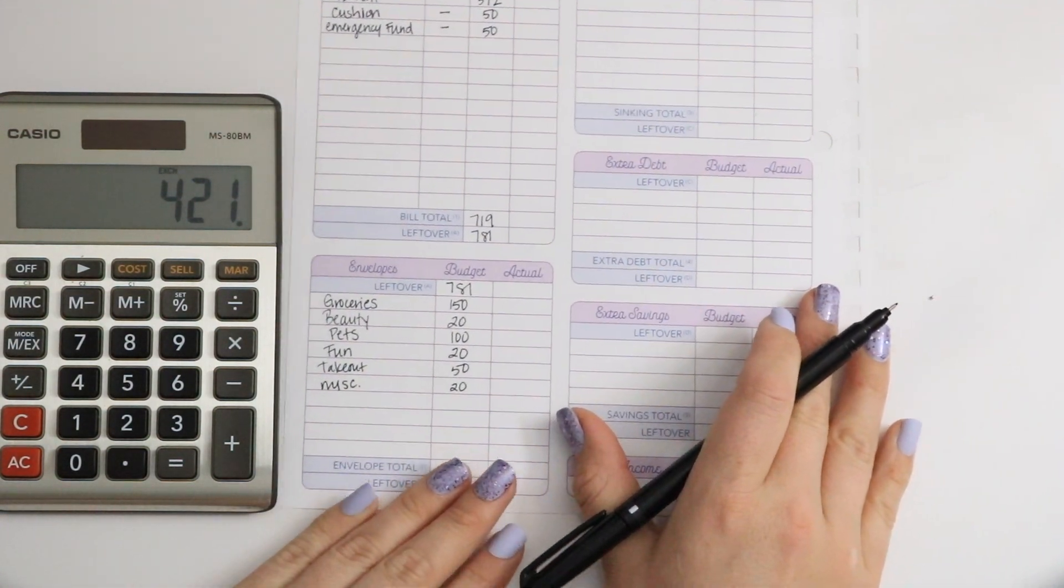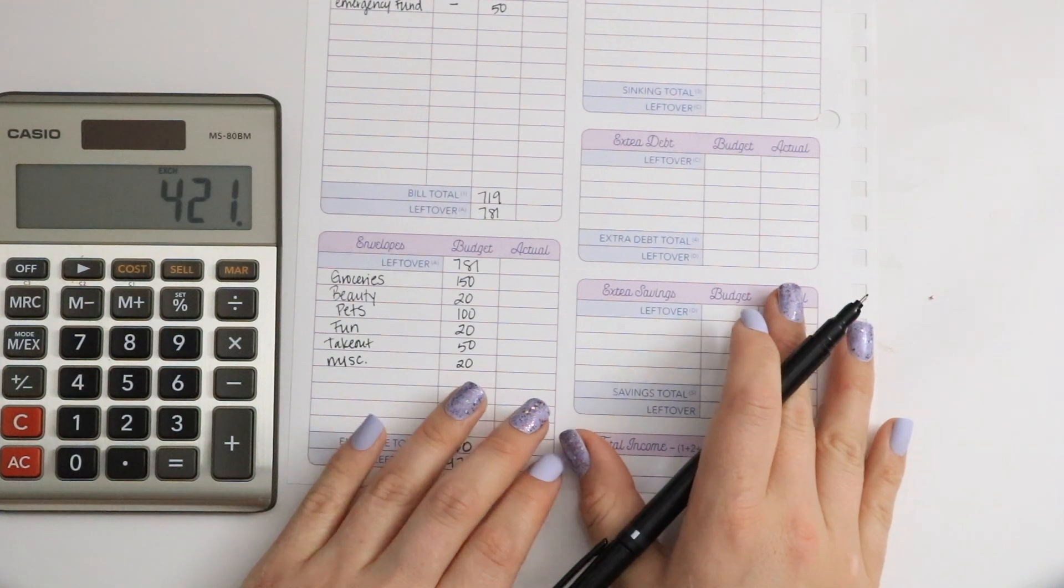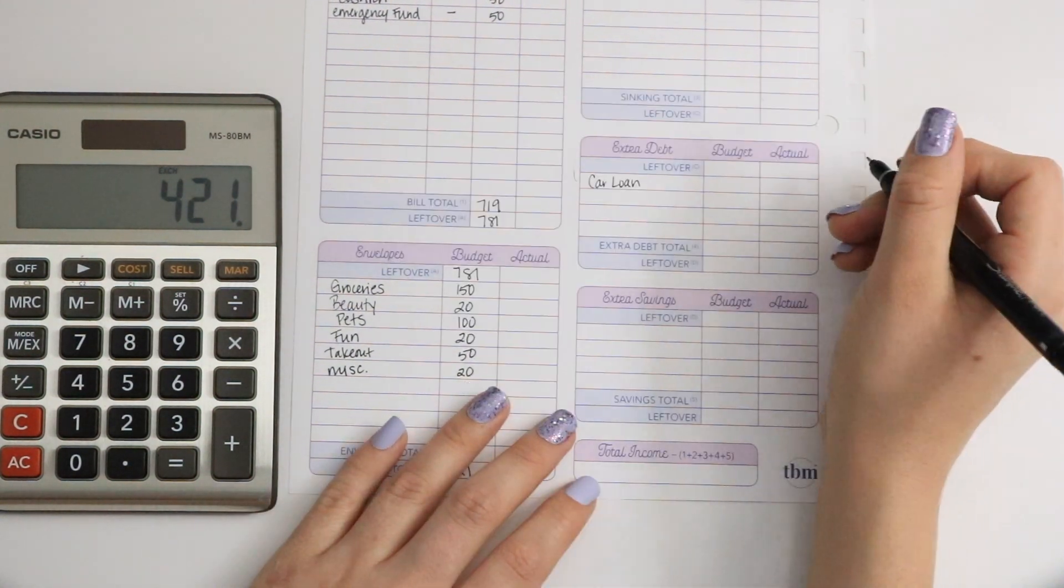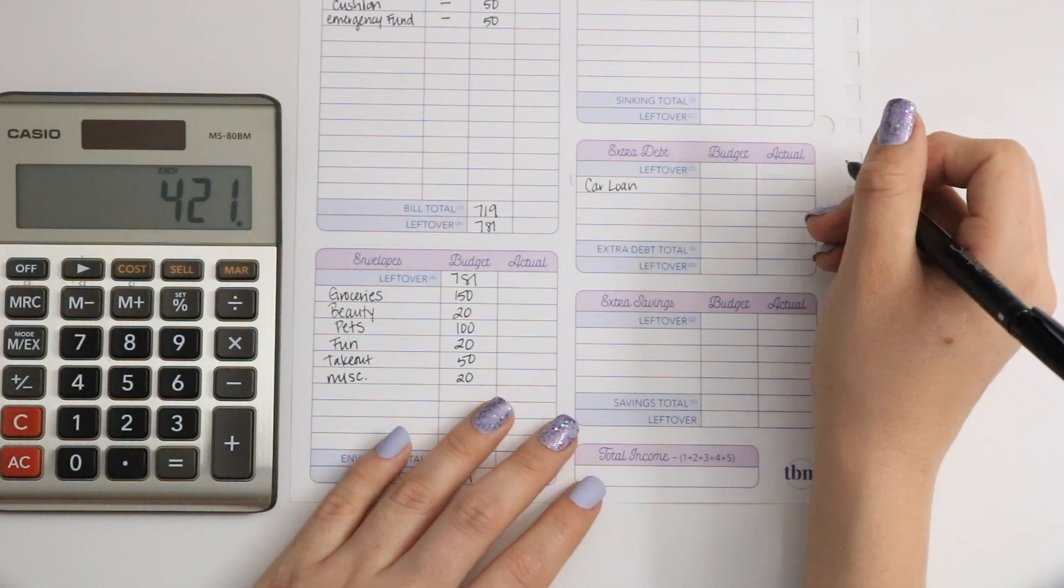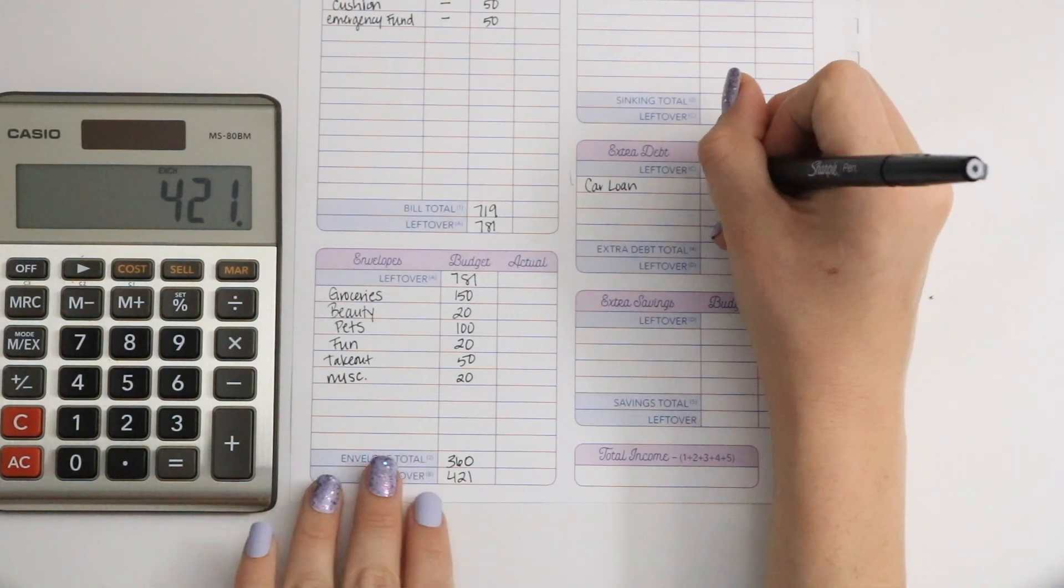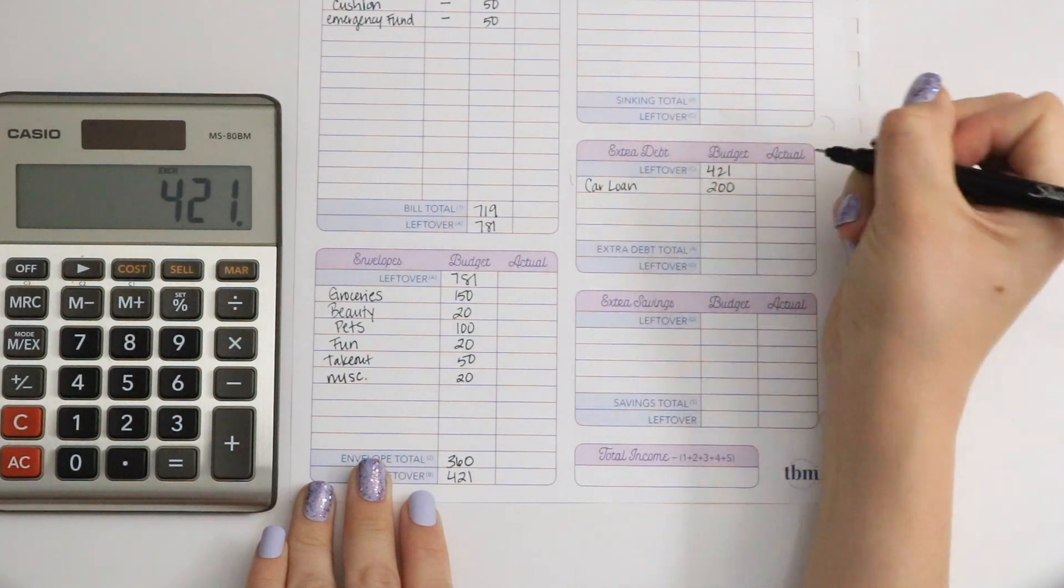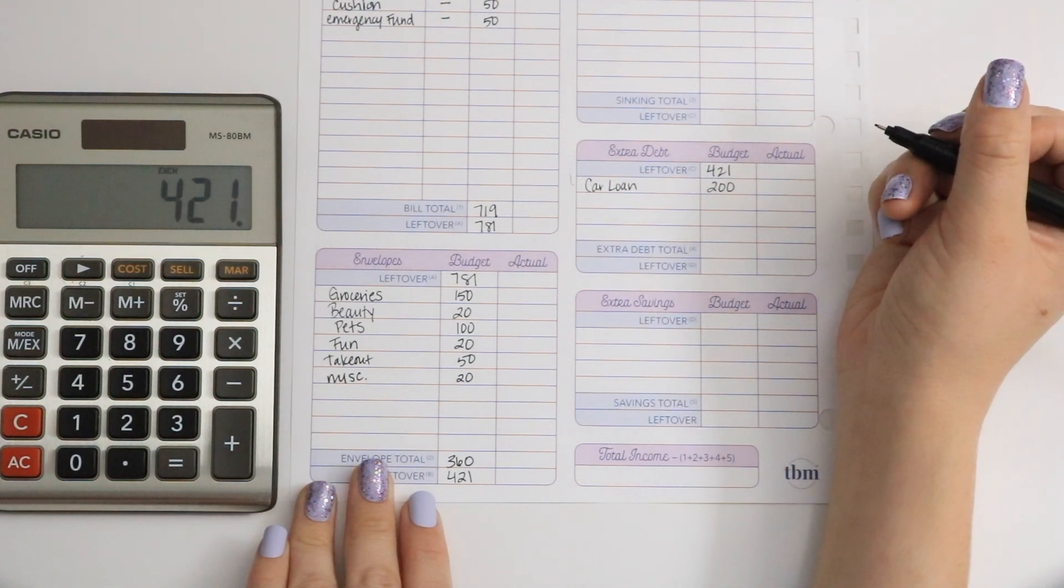We're going to go into our extra debt. The debt that I have is my car loan. I'm going to add $200 to my car loan so I can pay it off faster.